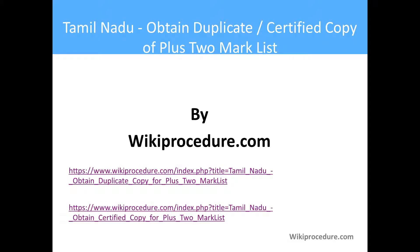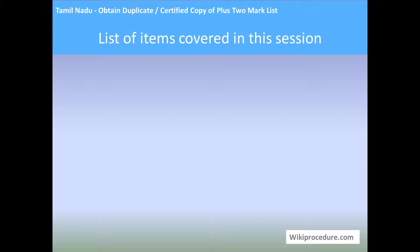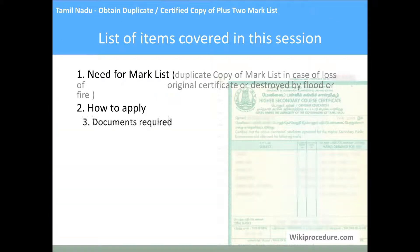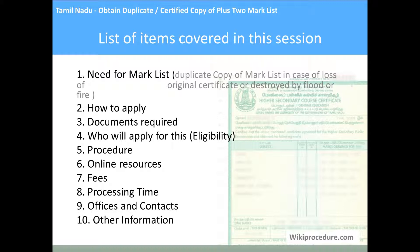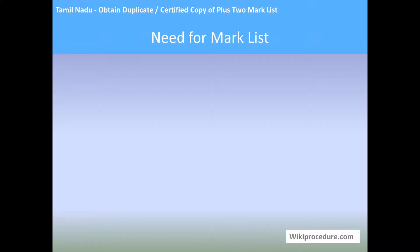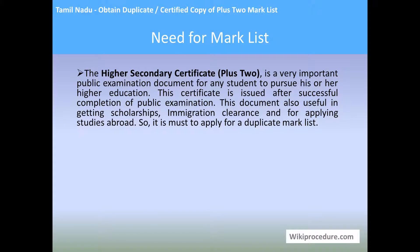How to obtain a duplicate or certified copy of plus two mark list by wikiprocedure.com. List of items covered in this session: need for a mark list, how to apply, documents required, who will apply for this certificate, procedure, online resources, fees, processing time, officers and contacts, and other information.